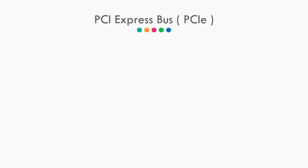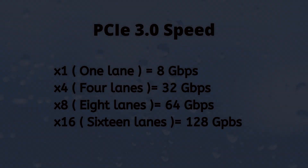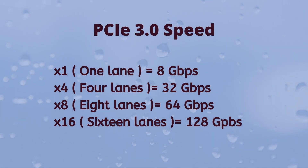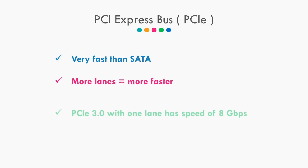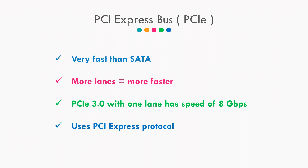Now let's see PCIe Express Bus, also known as PCIe. PCIe Express Bus is a very fast interface compared to SATA. PCIe has something called lanes, and one lane is referred to as X1. Basically, the more lanes there are, the faster it is. The latest version, PCIe 3.0, with only one lane (X1), has a speed of 9 Gbps, which is really fast. So we can see how fast PCIe is compared to SATA.